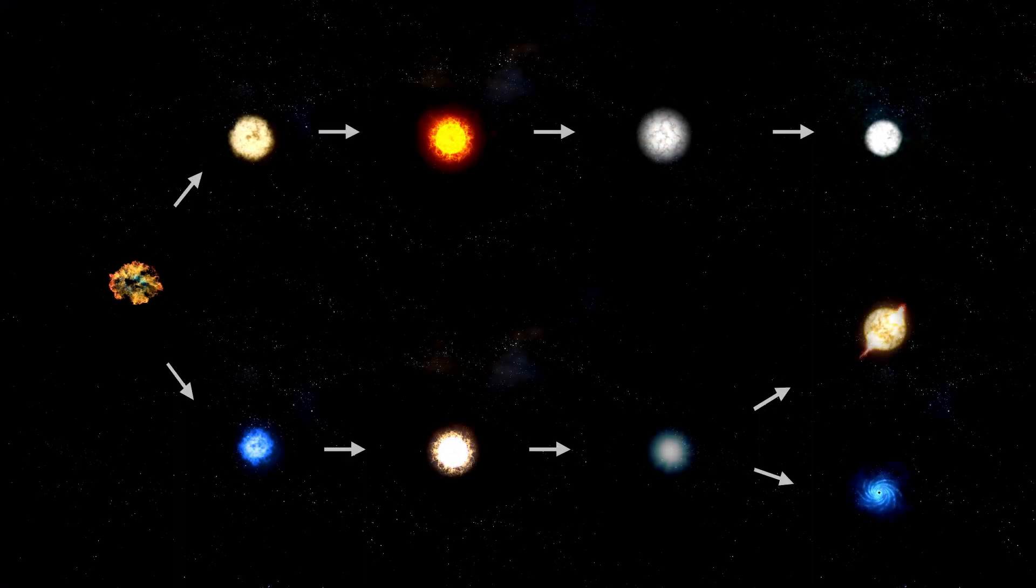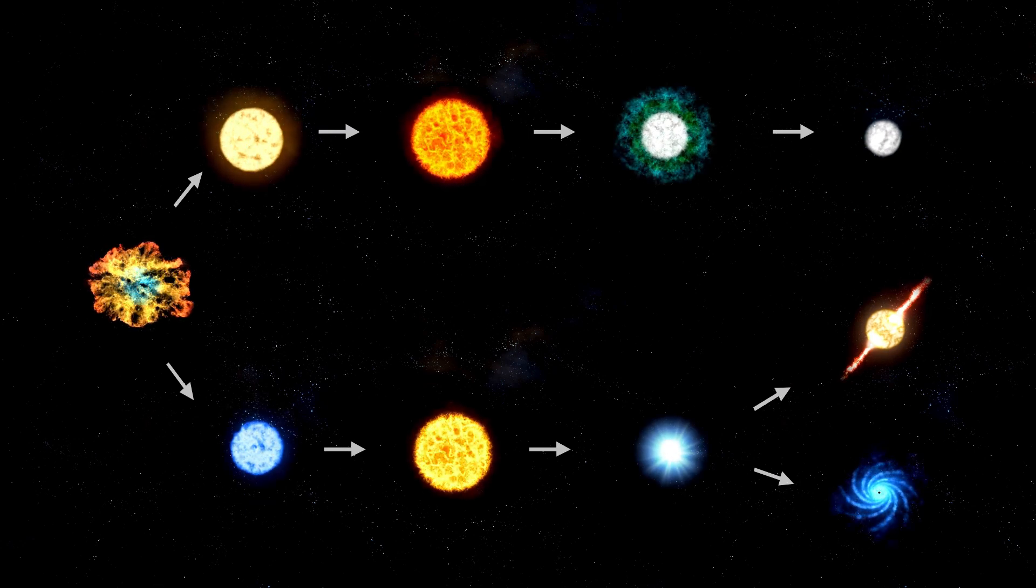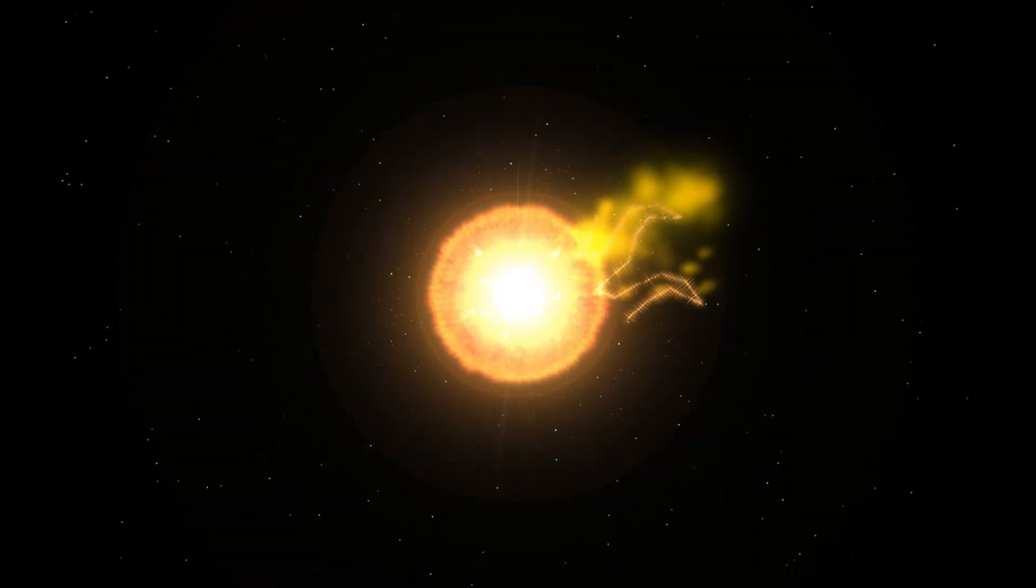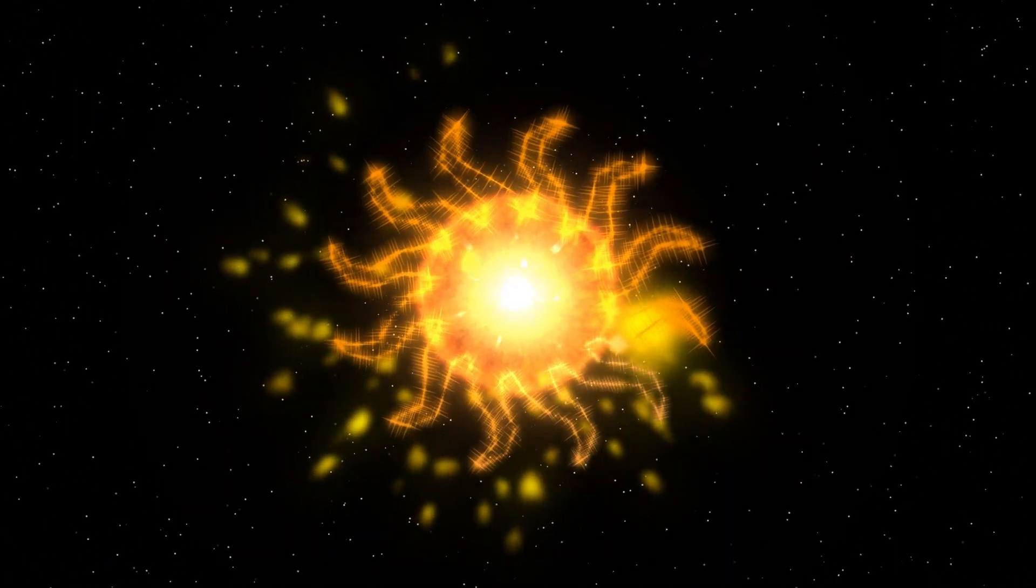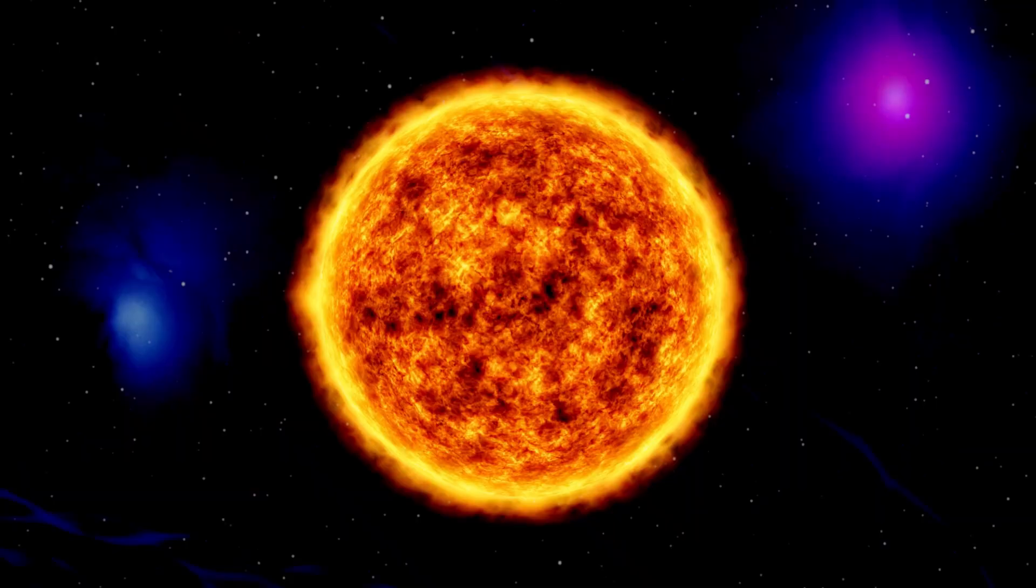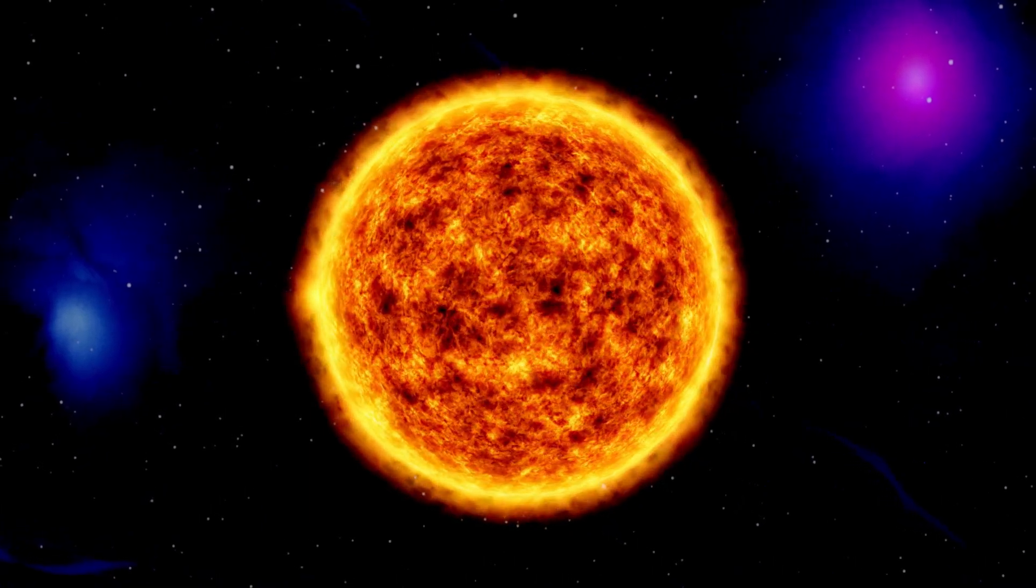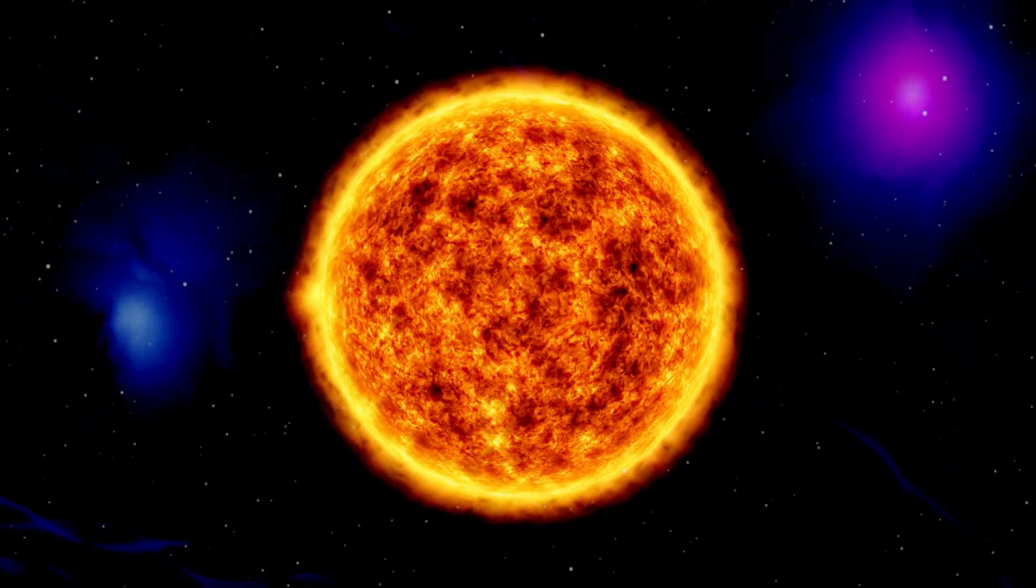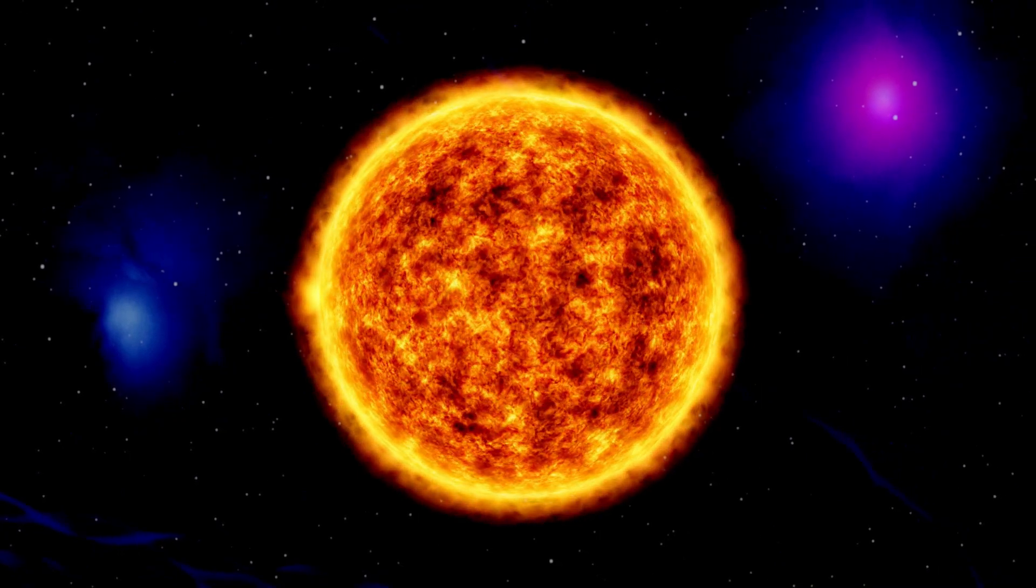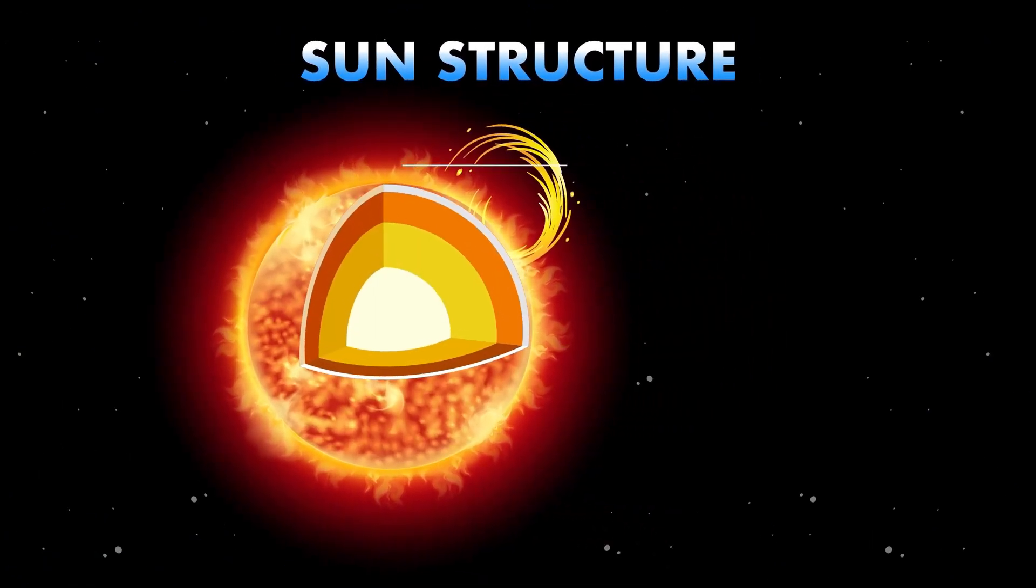It's accelerating, faster, more violently than expected. Some astrophysicists now believe Betelgeuse may be skipping phases altogether, moving through a collapse curve that shouldn't even be possible without external interference. Could there be a mechanism we've missed? A force at work we haven't identified? Or is this simply a star on the brink of an unprecedented kind of death? One the universe hasn't shown us before?